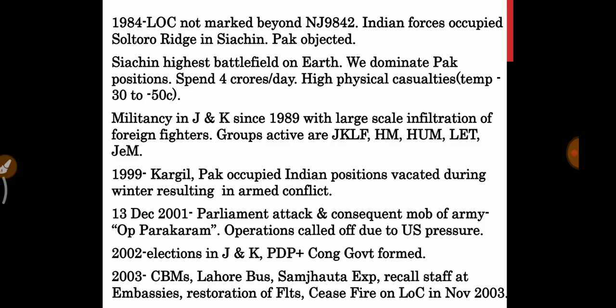In 2002, elections were held in J&K and a PDP-Congress government was formed. In 2003, several confidence-building measures (CBMs) were initiated: the Lahore Bus service, the Samjhauta Express, recall of staff at embassies, restoration of flights, and a ceasefire on the Line of Control in November 2003.